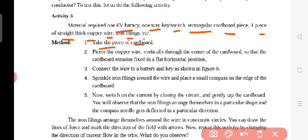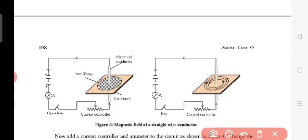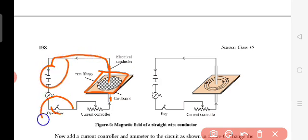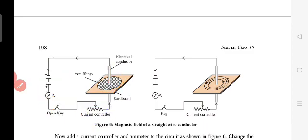Take the piece of cardboard, pierce the copper wire vertically through the center of the cardboard so that the cardboard remains fixed in a flat horizontal position. Here, take an electric conductor and keep it. This is the cardboard taken in rectangular shape and inside that they have pierced this electric conductor, this copper wire. And this is the battery and this is the switch and current controller and emitter.